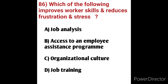Question 86: Which of the following improves worker skills and reduces frustration and stress? Options: A) job analysis, B) access to an employee assistance program, C) organizational culture, D) job training. Employee assistance programs encourage support groups, improve communication, teamwork, problem solving, self-management, and leadership skills. Option B, access to an employee assistance program, is the correct answer.